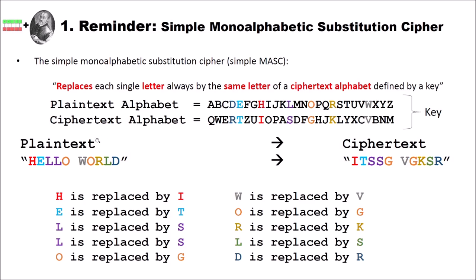For instance, we have the plaintext 'hello world', which is enciphered to the ciphertext ITSSG VGKSR. How does this work? We look at our first letter H, colored here for clarity. H is replaced by I — we look in our alphabets, find H, and write I. The same we do for E: E is replaced by T. We look in the plaintext alphabet, find E, and see T below it. We continue letter by letter until we have encrypted all letters and obtained our ciphertext. That is how the simple monoalphabetic substitution cipher works.